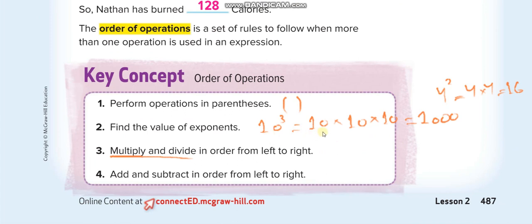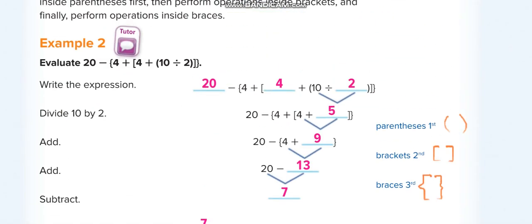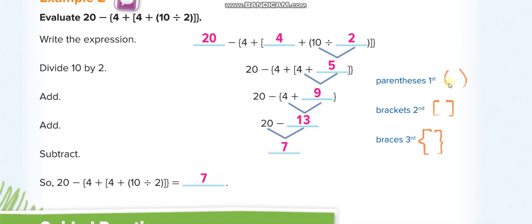These are the four rules: parentheses, then exponents, then multiply and divide, then add and subtract. Inside grouping symbols, we solve them one by one: first the parentheses, then the brackets, then the braces. For example, solve parentheses first, then brackets — 4 plus 5 equals 9 — then braces: 4 plus 9, and then minus.